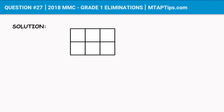It was mentioned in the problem that each side of a square has a measurement of one centimeter. On the top, there is also one centimeter on each side of a box, and there are three of them, so we have three times one centimeter.